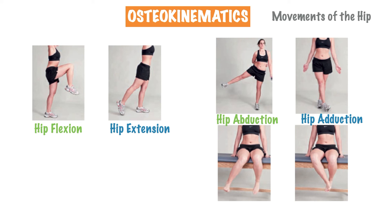Next is hip internal rotation, noted as IR. Looking at the individual's right leg, notice that the knee is turned inward — since the knee is in line with the hip, we have internal rotation of the hip. Looking at the image to the right, notice that the right knee is rotating outwardly, so we describe this as hip external rotation.